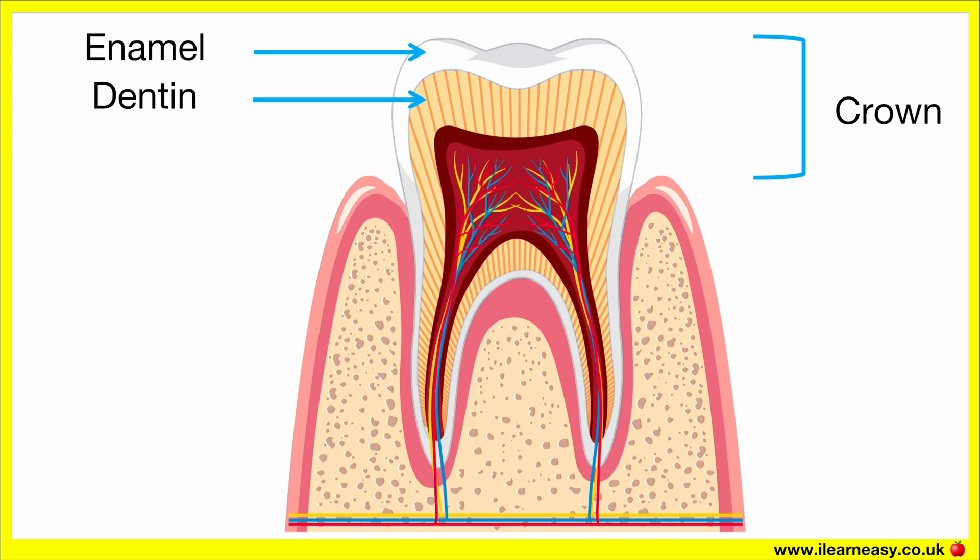Dentin. Dentin is the layer beneath the enamel. It makes up most of the tooth structure. Dentin supports the enamel and is more sensitive. It transmits signals to the tooth's nerve center, for example, heat or cold signals.